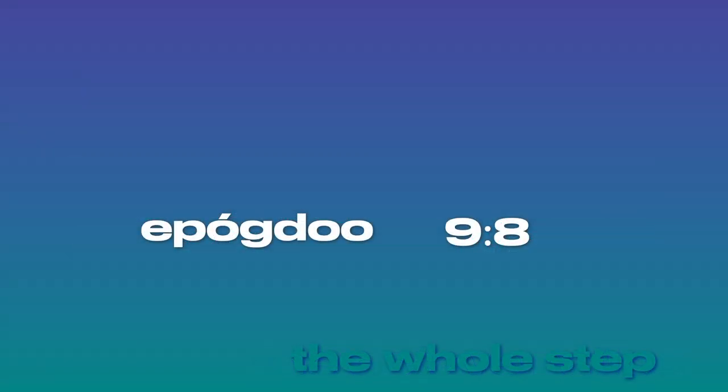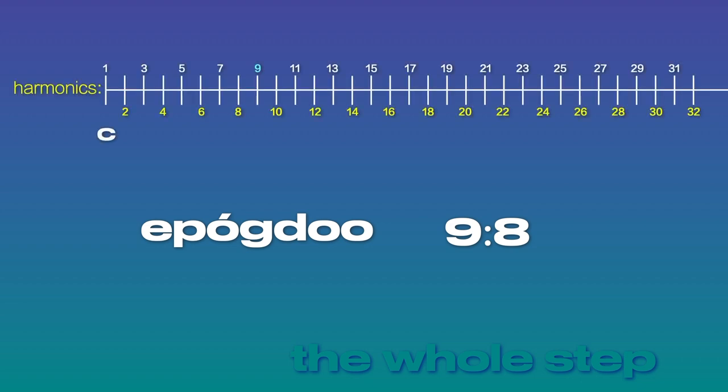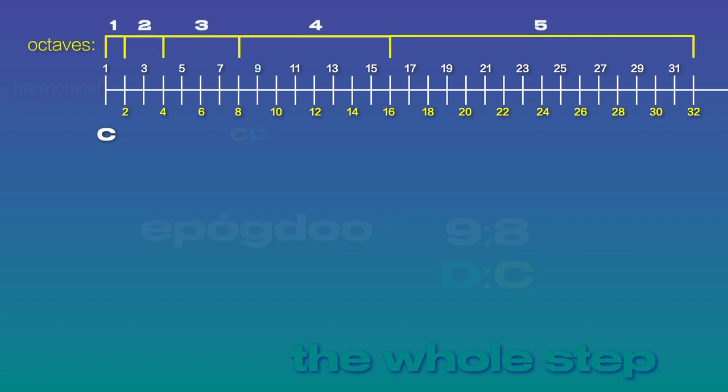From here, according to Plato, the demiurge further divided these intervals, using the apotome, the ratio of 9 to 8, that generates the whole step in a musical scale. In the harmonic series, the value of 9 is the note of D, and the value of 8 is the note of C. So the ratio of 9 to 8 is really the ratio of D to C.